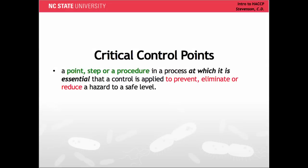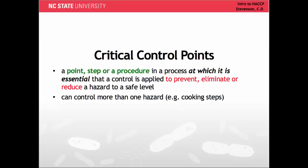Let's begin by defining critical control points. A CCP is a point, step, or a procedure in a process at which it is essential that a control is applied to prevent, eliminate, or reduce a hazard to a safe level. A CCP can control more than one hazard at a time. For example, cooking steps often destroy more than one type of pathogen.